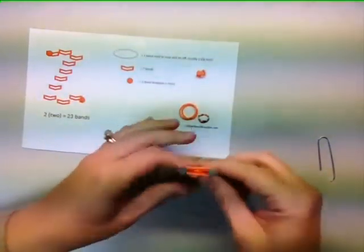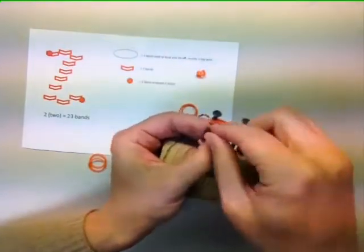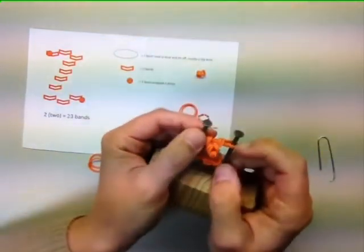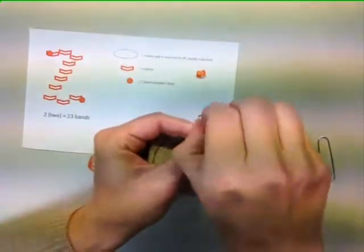So again, we will start with a prepared band on the nails. Add two more bands, weave as normal. Continue weaving as normal for five more weaves.